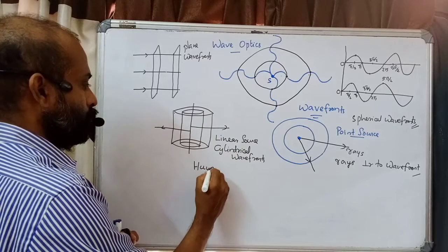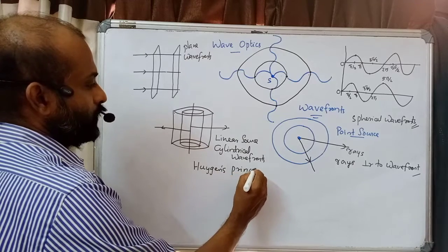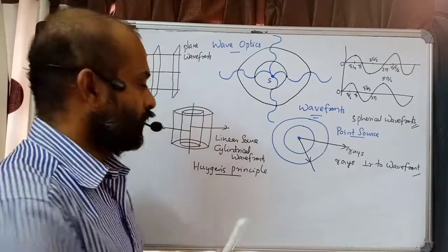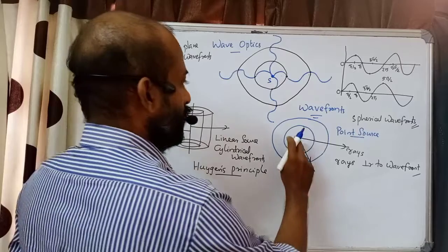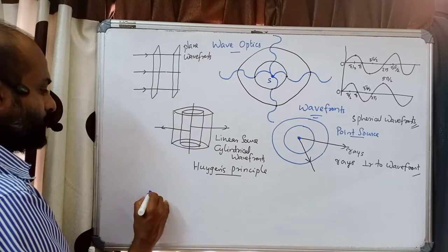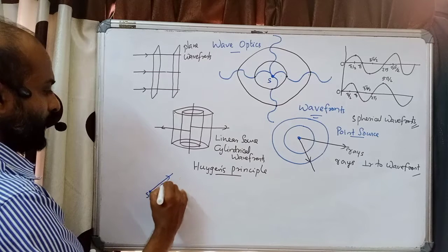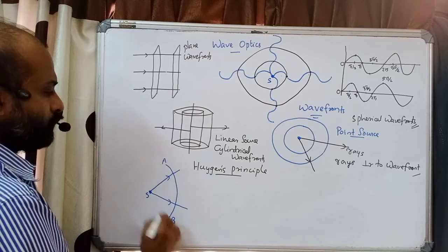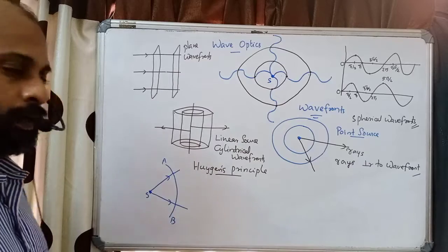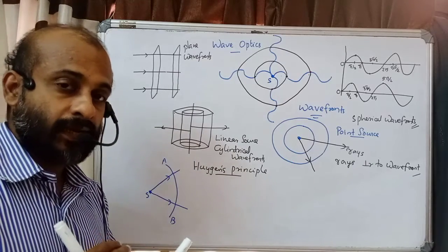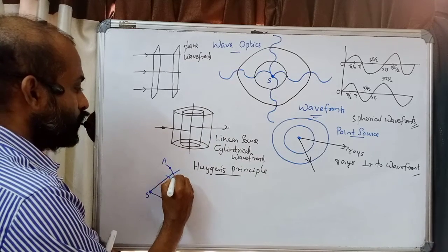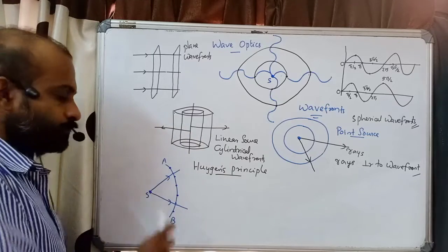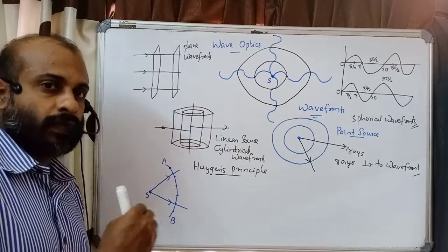Now we use an important principle related to wavefronts — known as Huygens' principle. Huygens' principle is very important; it helps us to locate the position of the wavefront. Since wavefronts are propagating, after a particular time we want to know where the wavefront will be — this principle helps us. Suppose I have a point source of light, I draw two rays and one wavefront at a particular time — let this be the wavefront AB. According to Huygens' principle, each point on the wavefront acts as a source of secondary wavelets.